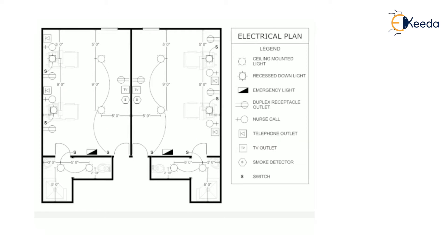The electric layout is made with the help of symbols. The outer outline is nothing but the plan of a building, and the inner portion is the electric plan, which is made with the help of electric symbols as per IS 962. Accordingly, we make the electric plan for any kind of building using the particular symbols.